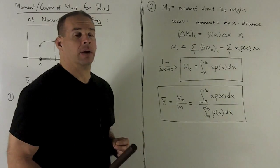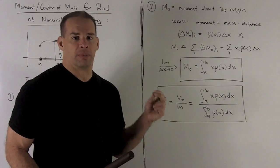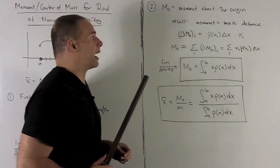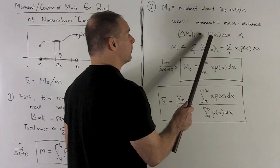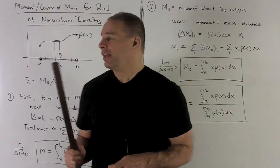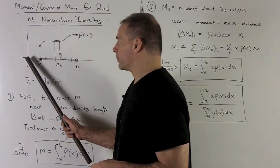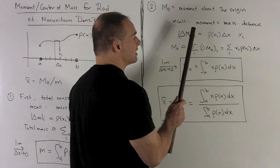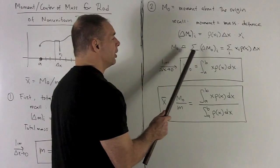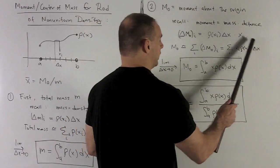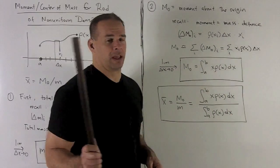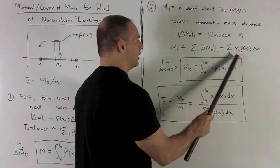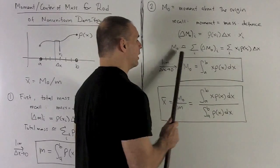For the moment about zero, the same idea applies. The formula for moment is mass times distance from the point you're taking the moment about. The mass element we approximate with ρ(x_i)Δx, and the distance from the origin is approximated by x_i. So the element of moment about the origin for that segment is x_i · ρ(x_i) · Δx. To approximate the total moment, we sum over all segments, then apply the limit: sigma becomes the integral from a to b, Δx becomes dx, and x_i becomes x. This gives our formula for the moment about the origin: M₀ = ∫[a to b] x·ρ(x) dx.